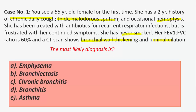This condition — with chronic daily cough, thick malodorous sputum, occasional hemoptysis, bronchial wall thickening, and luminal dilatation on CT scan — is most likely bronchiectasis. Bronchiectasis is defined as irreversible dilatation of airways due to inflammatory destruction of airway walls, resulting from persistently infected mucus. It usually affects the medium-sized airways. The most common sputum pathogens in non-cystic fibrosis patients are H. influenzae, Pseudomonas aeruginosa, and Moraxella catarrhalis.